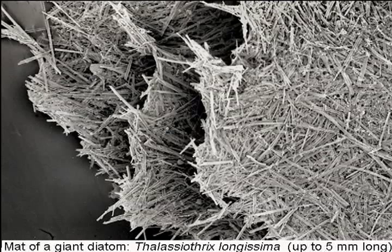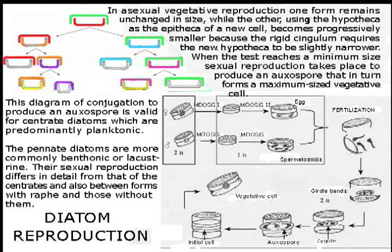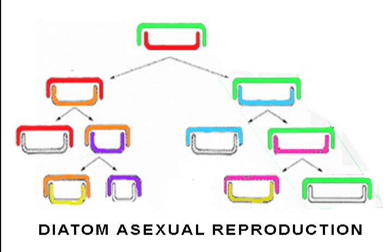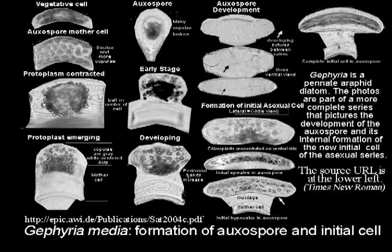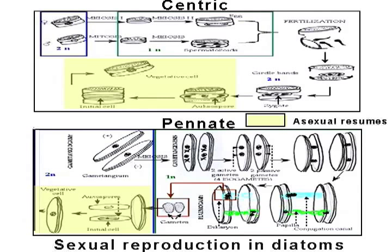Some diatoms reproduce massively to form thick mats like this one. Asexual reproduction involves a cell division in which each of the valves of the parent frustule becomes the epitheca of a new cell. So there is a progressive decrease in the size of the frustule of one fork of the succeeding generation. At some point, vegetative reproduction of its fork ceases and a large cell, an auxospore with a wall structure lacking silica, is formed by conjugation. The photos on this slide illustrate the process. The auxospore makes a new cell that has a maximum-size frustule and asexual reproduction begins again.